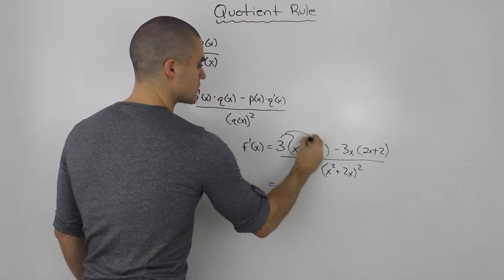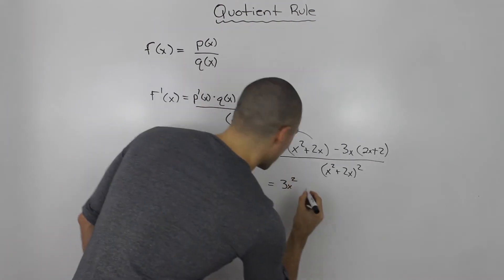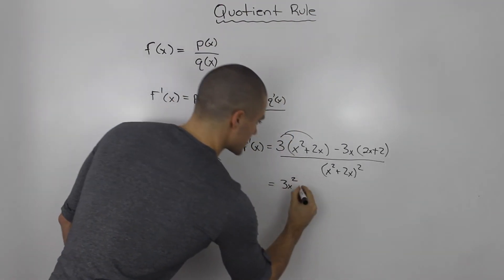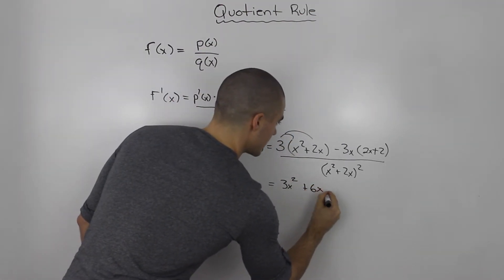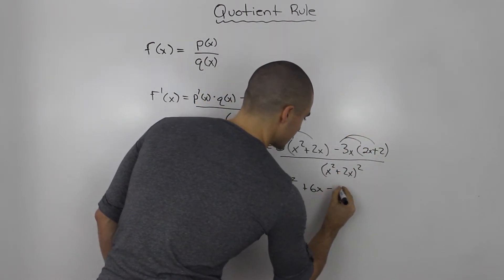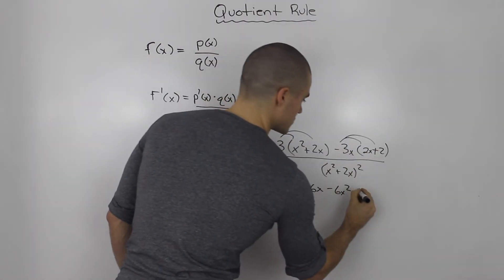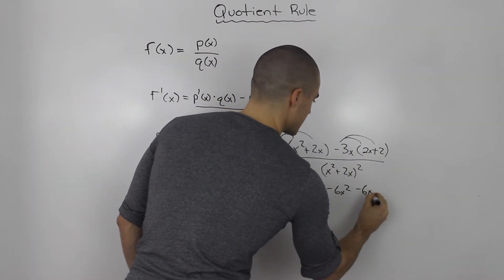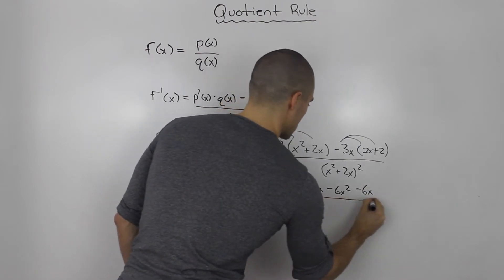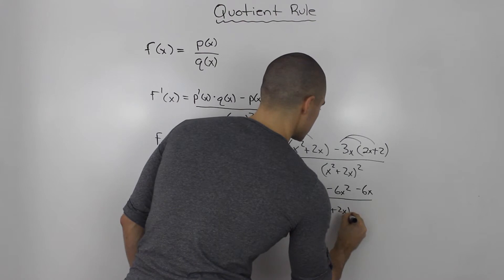Let's distribute the 3 in, so we'll have 3x² + 6x. Then distribute the -3x in the bracket: -3x times 2x is -6x², and -3x times 2 is -6x. This is all over (x² + 2x)².